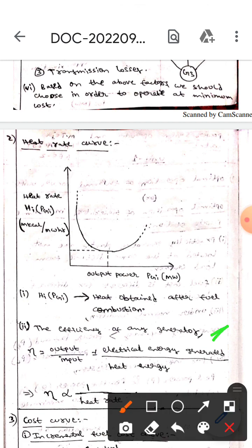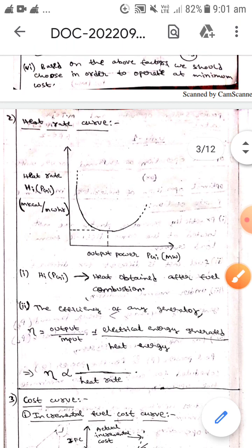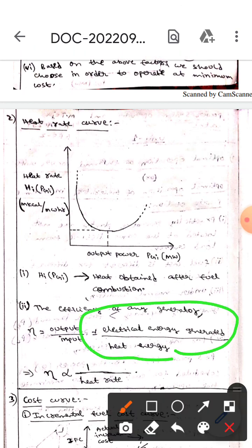The efficiency of energy generator is, we know that the efficiency of energy generator is output by input. Here the input is electrical energy generated whereas the output is heat energy. If you observe this, from this we